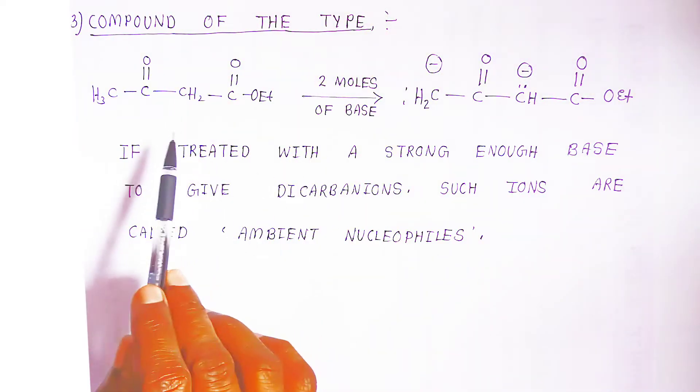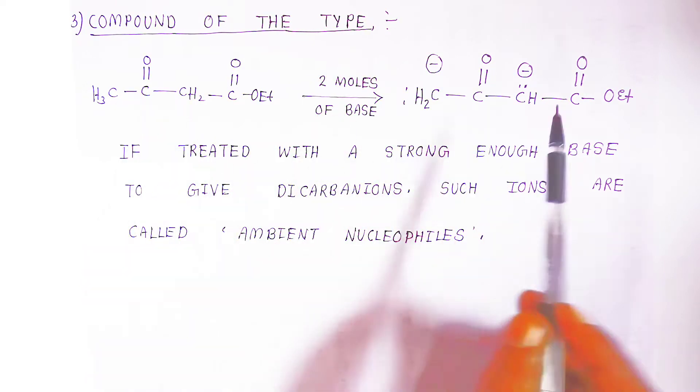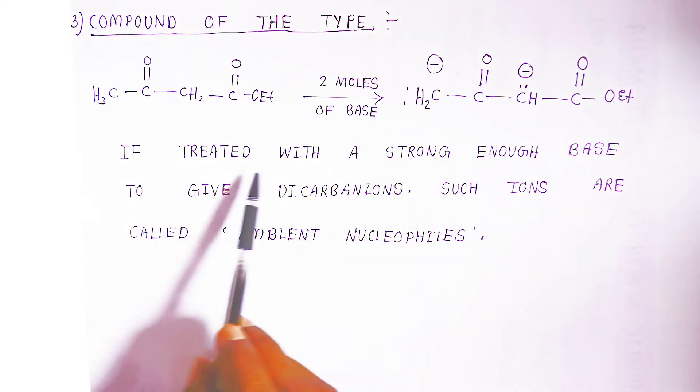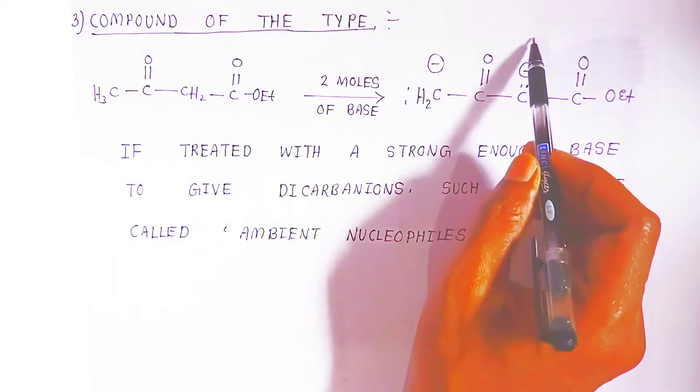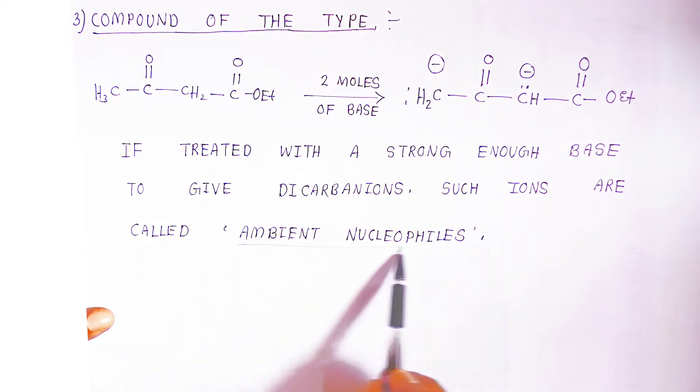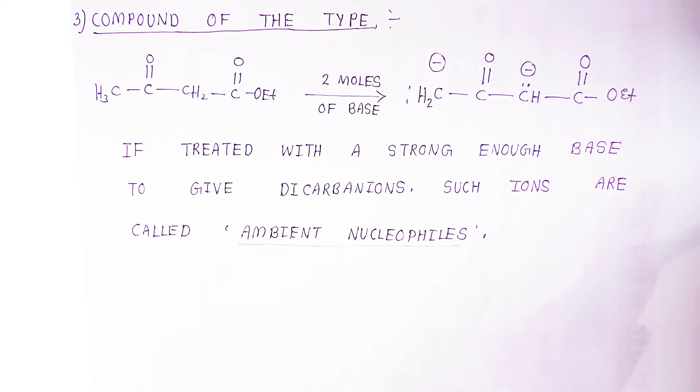Both carbon and oxygen are present - nucleophiles are present. Now, compound of this type: when you are taking two moles of base it will form two anions. Nucleophiles will be present here. If treated with a strong enough base, give dicarbe anions. Such ions are called ambient nucleophiles.